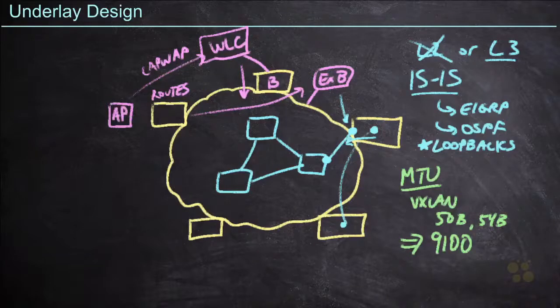This is going to make sure that even if we're running jumbo frames at 9000 bytes that we have plenty of overhead, 100 bytes of overhead in order to handle the VXLAN headers as well as anything else that might arise.